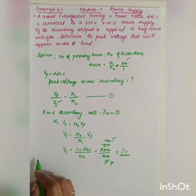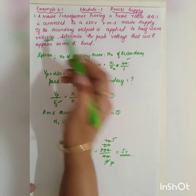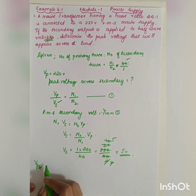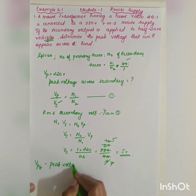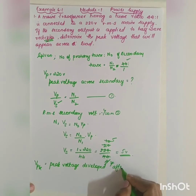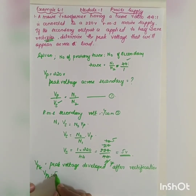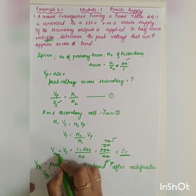From this we can calculate the peak voltage at the rectifier side. The peak voltage developed after rectification is given by the formula: Vpk equals root 2 multiplied by Vrms, where Vrms is the RMS voltage across the secondary.